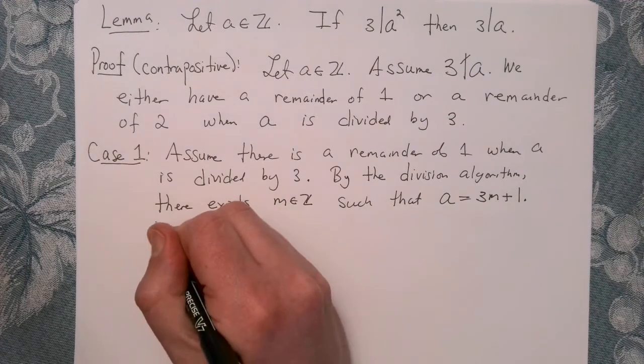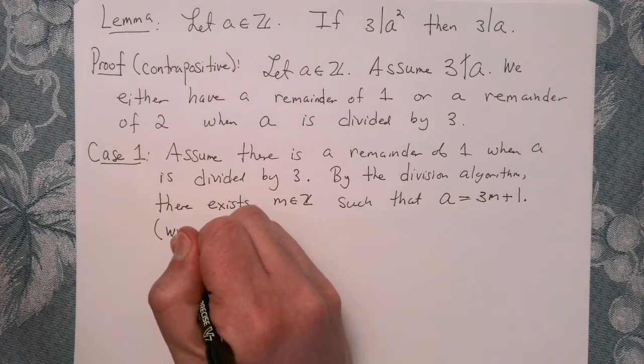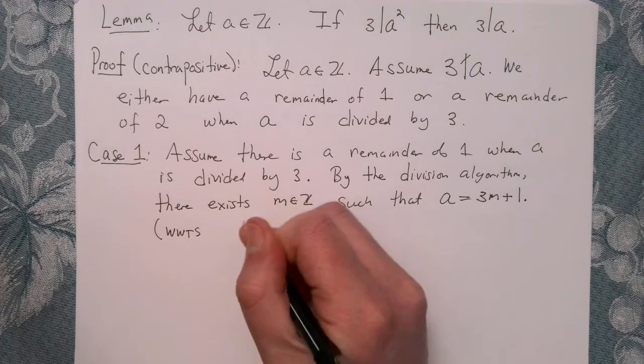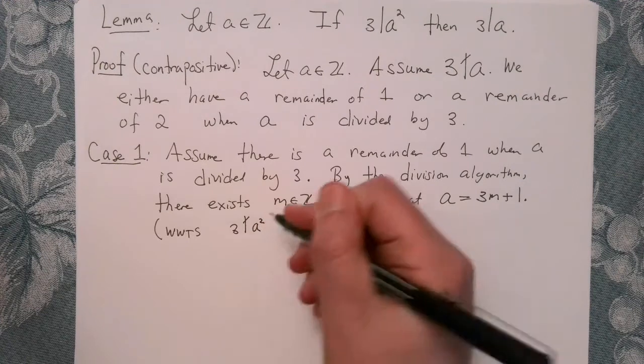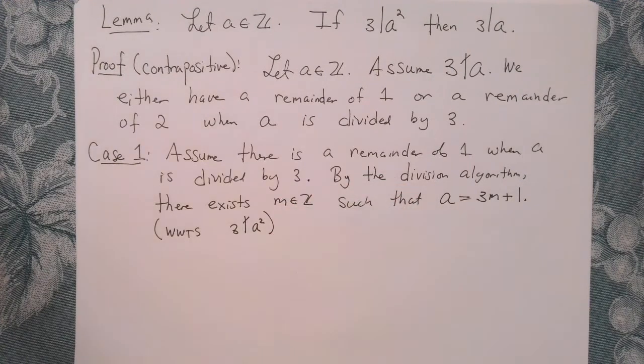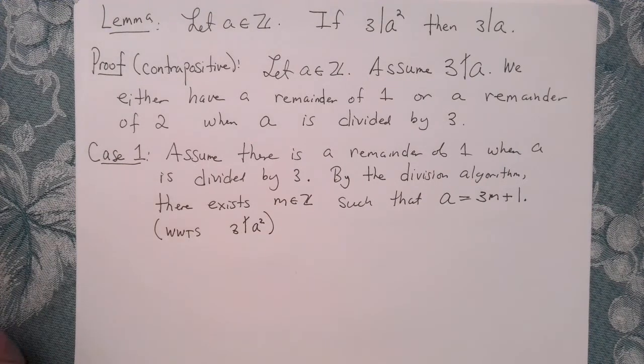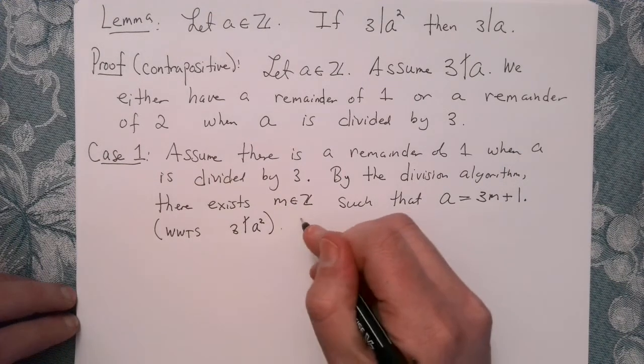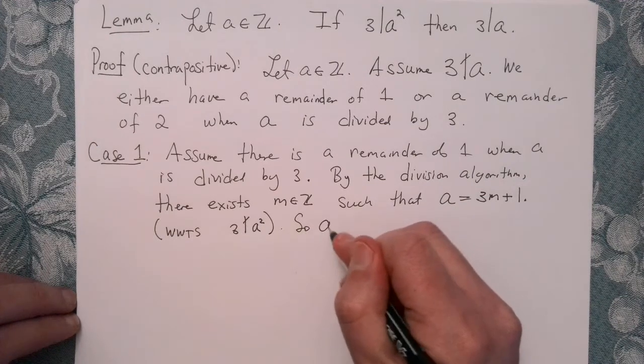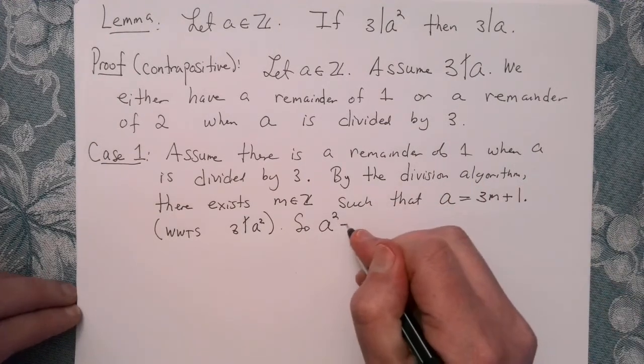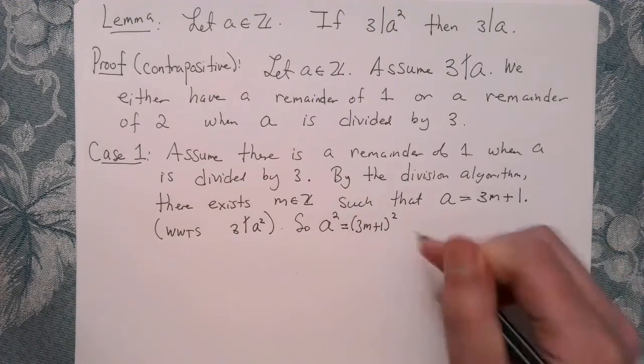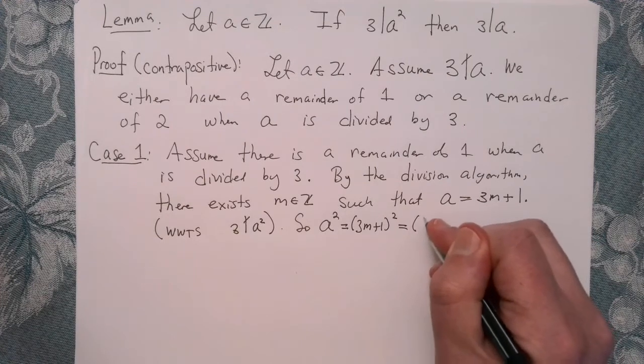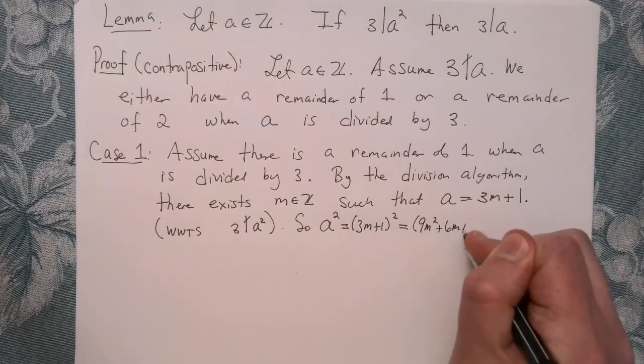And again, keep in mind the goal. We want to show, or we wish to show, that 3 does not divide A squared in our proof by contrapositive. That means we need to compute A squared and see what happens. So A squared, we're going to square exactly this quantity. Well, that's exactly 3M plus 1 quantity squared.